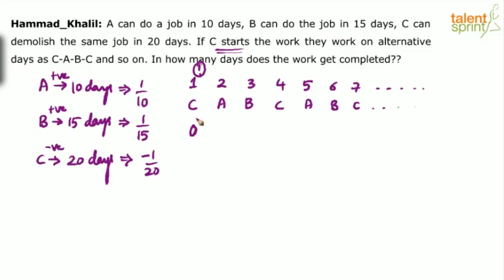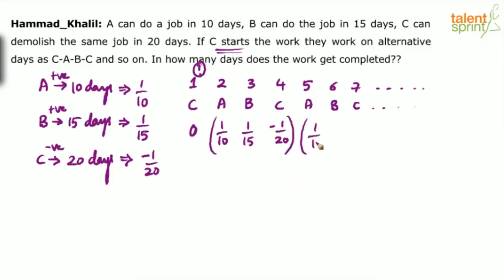C has worked on the first day but his work was zero — he did not do anything because there was nothing to demolish. So on the first day zero work is done. On the second day A comes and does 1/10th of the work. On the third day B comes and does 1/15th of the work. Then on the fourth day C comes and does minus 1/20 of the work. Taking the first day as an exception where zero work was done, in the next three days this work is done: 1/10, 1/15, minus 1/20, and so on. That's Case 1.